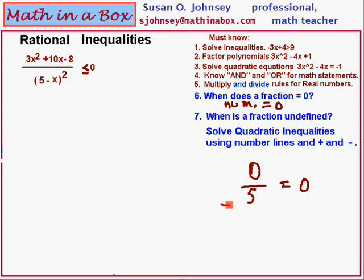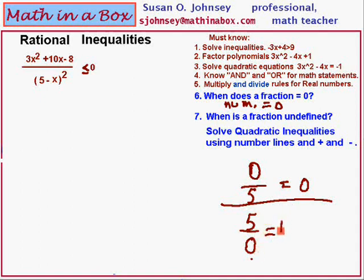Now, when is a fraction undefined? An undefined fraction is one that has a denominator that is zero. Don't confuse these two. Five divided by zero — I like to call it five zeroes. You've never heard of a zeroth, right? Five zeroes is undefined. So a fraction is undefined if its denominator equals zero. We need to know both of these ideas in order to solve rational inequalities.